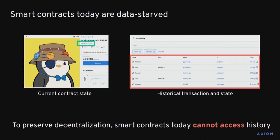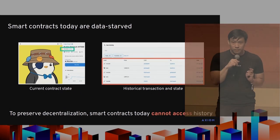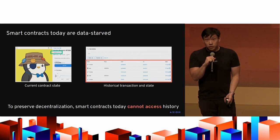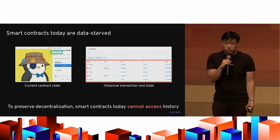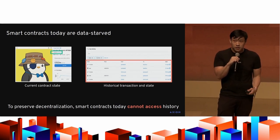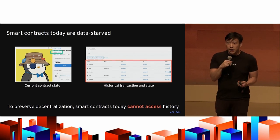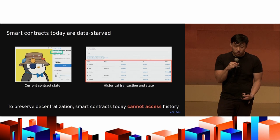If you look at the listing for this cute penguin on OpenSea and try to identify all the pieces of on-chain data on the page that can actually be used on-chain, you'll find that the answer is only the owner — namely Zac Efron. All the other rich information on the page, like the transaction history, the historical prices, and all that good stuff that OpenSea users get to see, is simply not available to your smart contract.